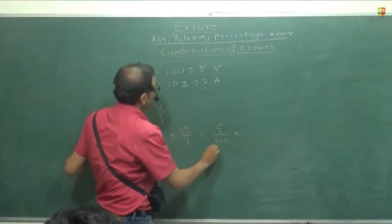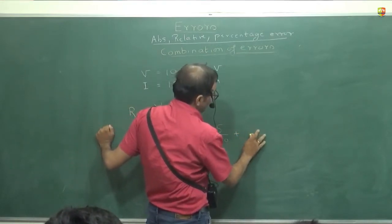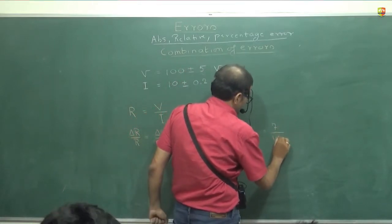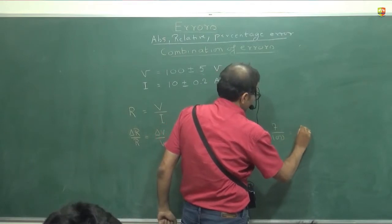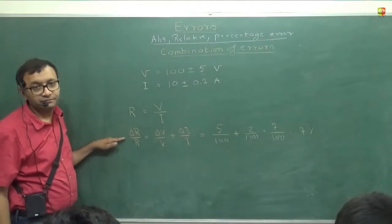You remember the formula for resistance, ratio between voltage and current. So delta R by R is equal to delta V by V plus delta I by I. What is delta V by V and delta I by I? Delta V is 5 by 100 plus 0.2 by 10. So this is 7 by 100. So percentage error is 7% in the measurement of resistance.